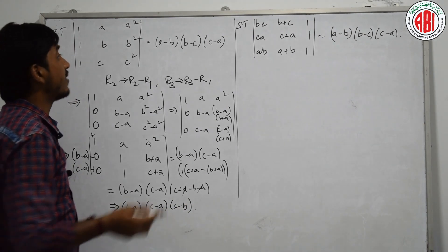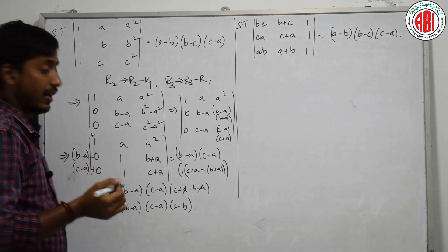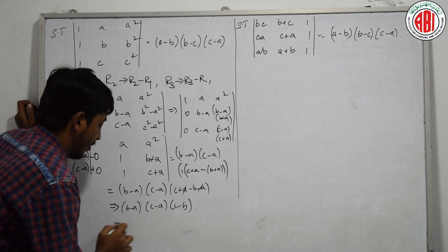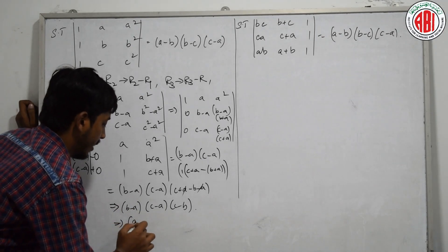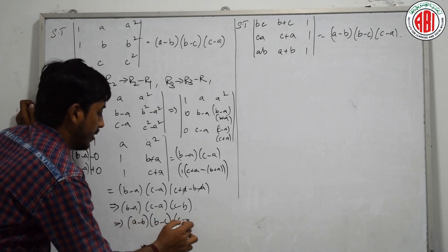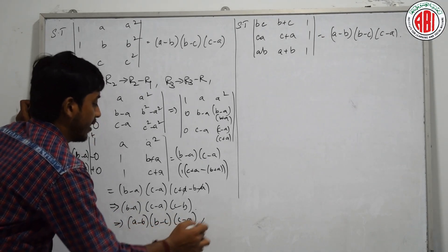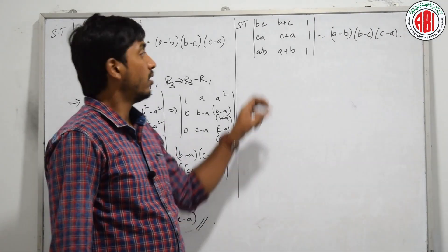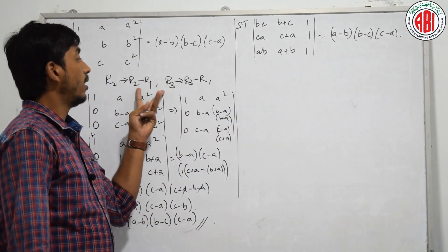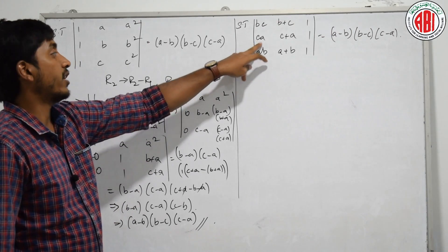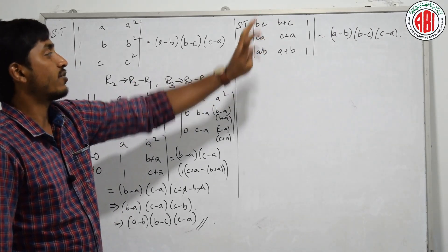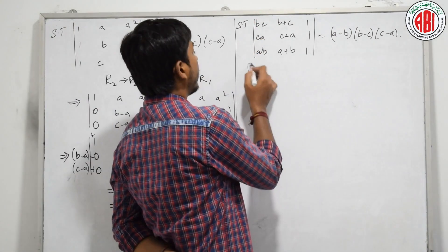What is the answer? B minus A, C minus A, C minus B. Just take minus common from this and minus common from this, and you will get it as (A minus B)(B minus C)(C minus A). Those are the first popular row operations: R2 tends to R2 minus R1, R3 tends to R3 minus R1.